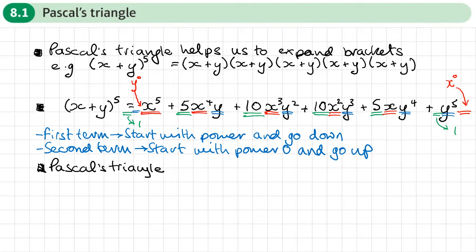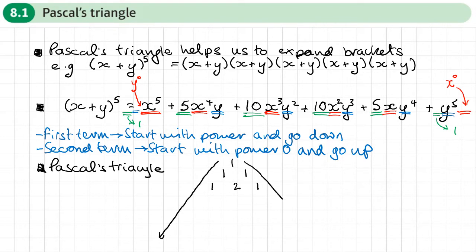How do we get Pascal's triangle? We start with one at the top. It's basically a triangle of numbers. Then we have ones on the edges — a bit like the Fibonacci sequence, we have some starting numbers. For each row underneath, we add the numbers above it to get the next row. So it's always going to be a one on the outside. Then one plus one gives two. For the next row: ones on the outside, one plus two gives three, and two plus one gives three. Notice how it's symmetrical.